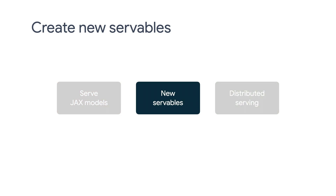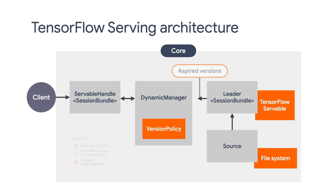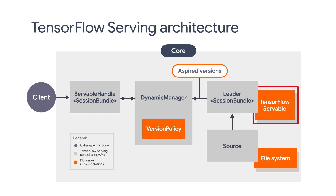Moving on to creating new servables — although TF Serving is primarily designed to serve TensorFlow models, it is also flexible and can be extended to support non-TensorFlow models. In addition to JAX models, we have seen other ML model support from the user community, for example, XGBoost models. To support non-TF models, the first thing you need to do is to create a new kind of servable. A servable is the underlying object that clients use to perform computation, for example, a lookup or inference.